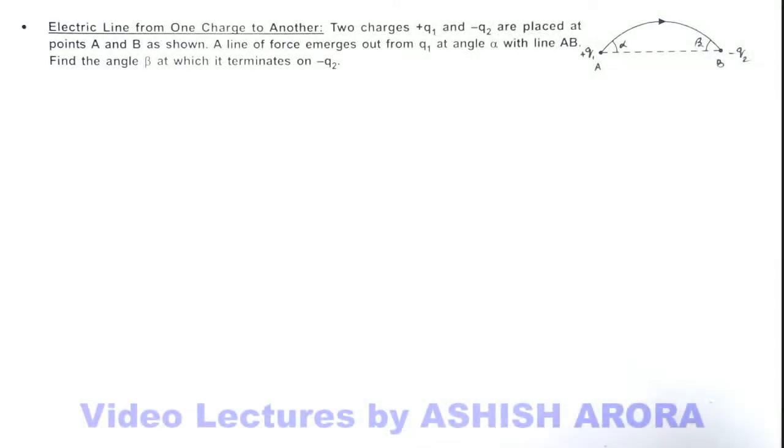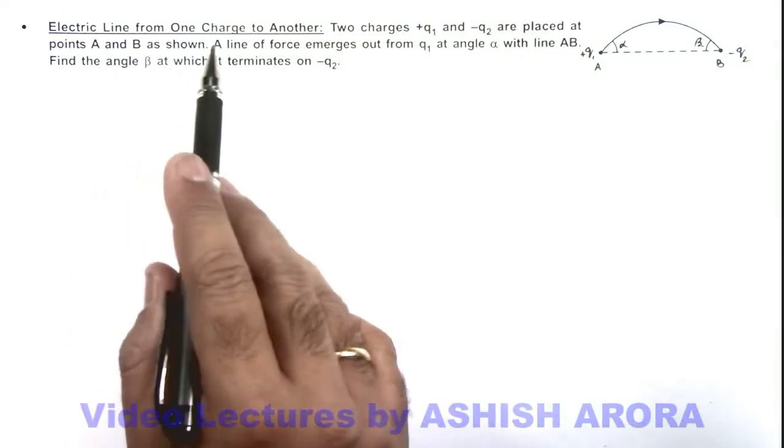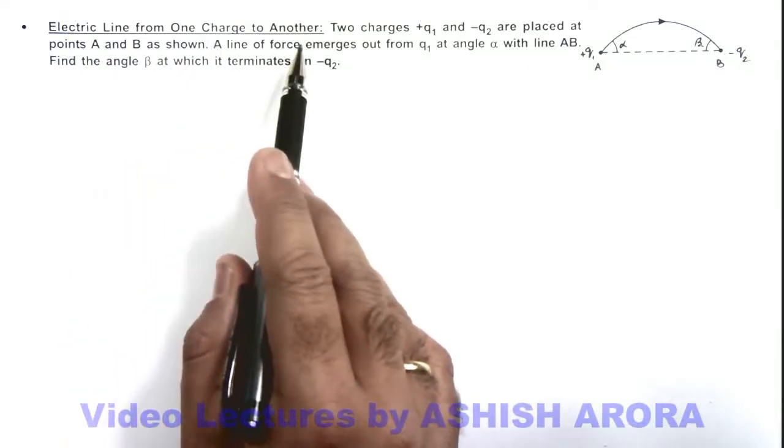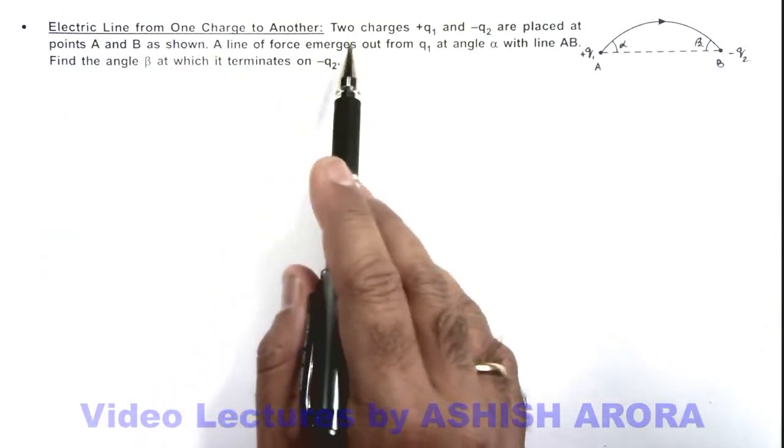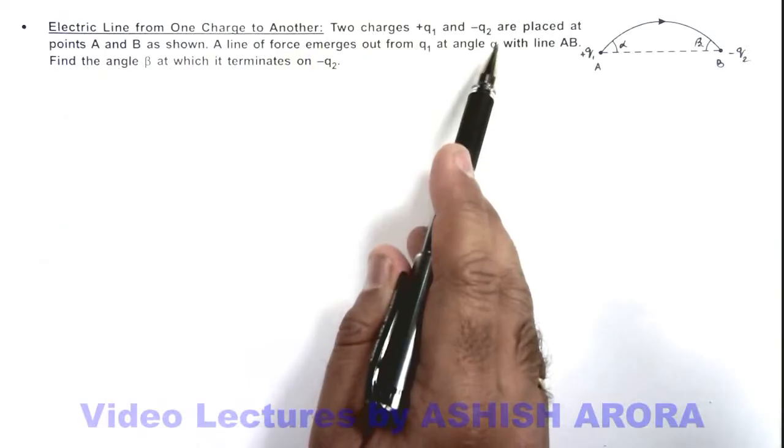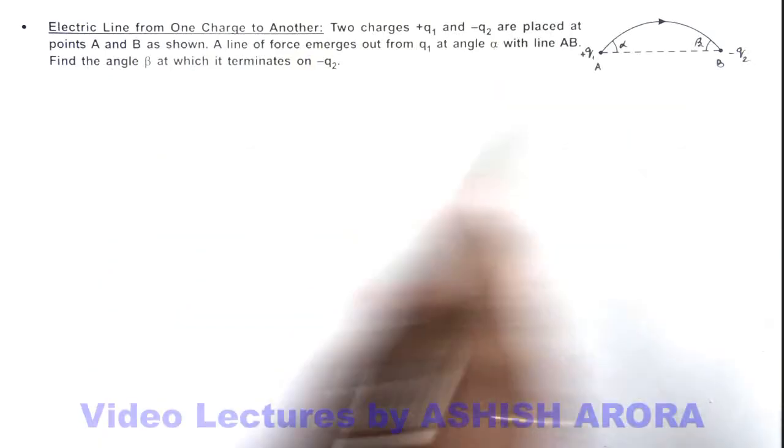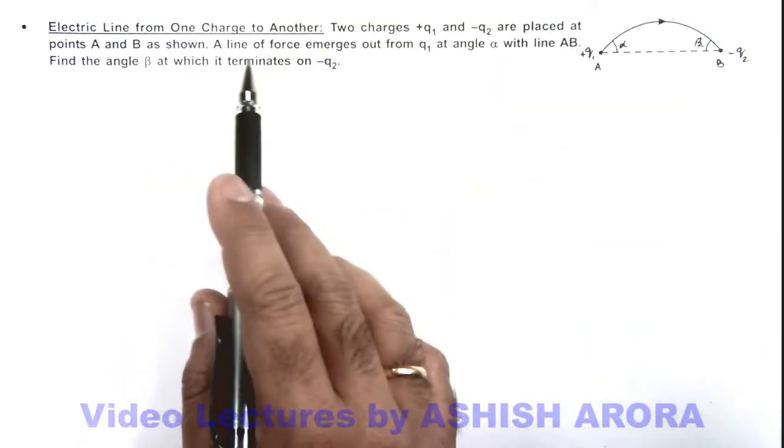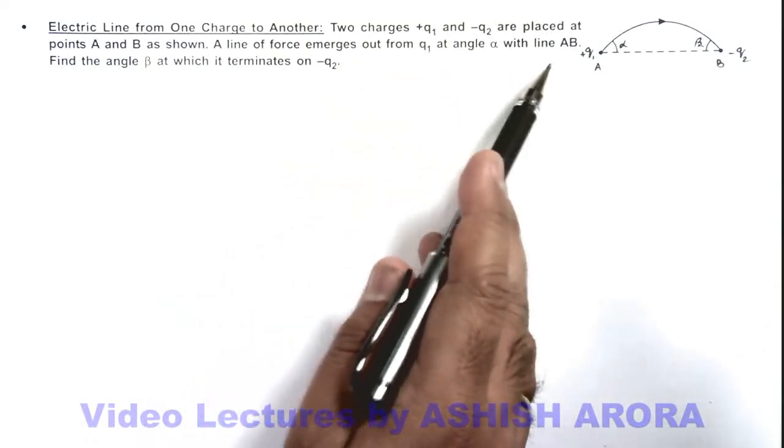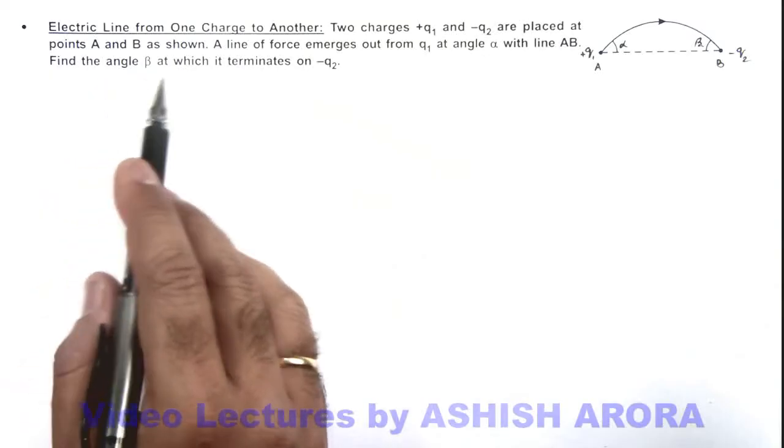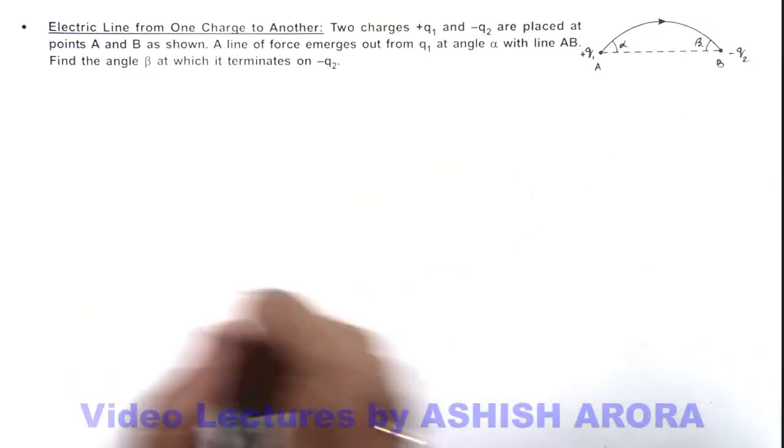Dear students, let's now analyze an illustration on electric line which is originated from one charge to another. Here it is saying: two charges q1 and minus q2 are placed at points A and B as shown. A line of force emerges out from q1 at an angle alpha with line AB, and we are required to find the angle beta at which it terminates on minus q2.